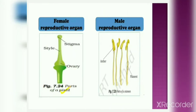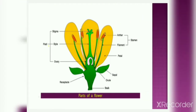Stamen is the male reproductive part and it consists of anther and filament. Now we have understood the parts of flower. So, what are the parts of flower? Yes — petals, sepals, pistil, and stamen. Pistil consists of stigma, style, and ovary. And stamen consists of anther and filament. Now let's move forward.